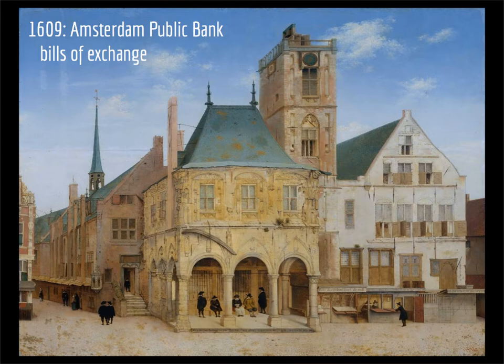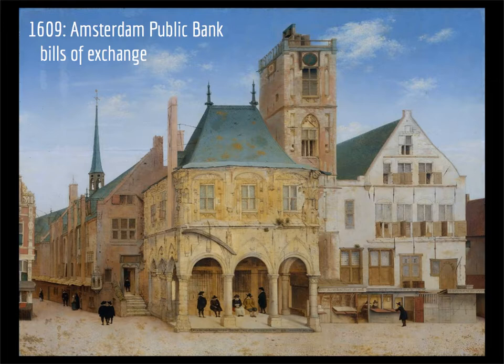The Dutch Republic was stable, and as a result of the political stability, even before their official independence from Spain, the provinces were able to enjoy a remarkable time of growth and expansion in the late 16th and 17th centuries. This was called the Dutch Golden Age. In 1609, the Amsterdam Public Bank opened its doors and served as the main instrument of Dutch financial operations.